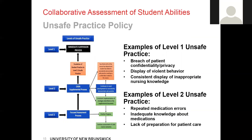Examples of level 2 unsafe practice include, but are not limited to, repeated medication errors, inadequate knowledge about medications, or lack of preparation for patient care. If the student consistently demonstrates improvement and there is positive progress, you can continue the assessment as usual. If the student has failed to demonstrate consistent progress and more than two-thirds of the course has lapsed, it is an automatic NCR — no credit for that course for that student.